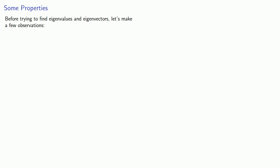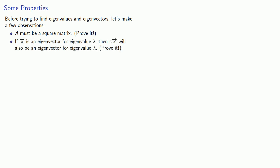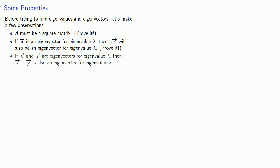Before we try to find eigenvalues and eigenvectors, let's make a few observations. First, in order for there to be any possibility of having an eigenvector or eigenvalue, A has to be a square matrix — you should prove that this is the case. Next, if you have an eigenvector for a given eigenvalue, then any scalar multiple of that eigenvector will also be an eigenvector for that eigenvalue. And finally, if you have two eigenvectors for a given eigenvalue, their sum will also be an eigenvector for that eigenvalue.